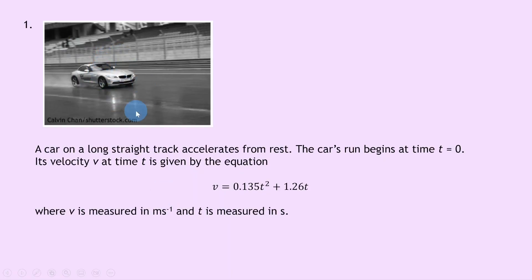Now question 1 here shows a picture of a car on a racetrack. A car on a long straight track accelerates from rest. The car's run begins at time t equals 0. Its velocity v at time t is given by the equation v equals 0.135t squared plus 1.26t, where v is measured in meters per second and t is measured in seconds.